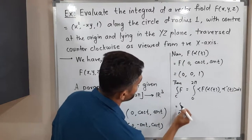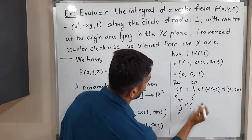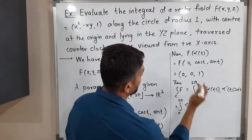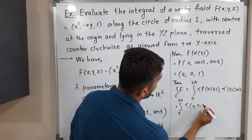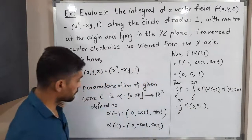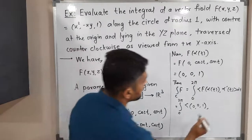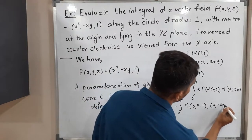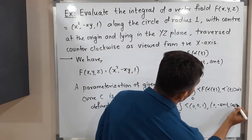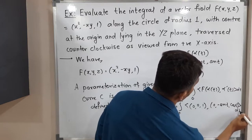So I should write 0 to 2π. Definition says inner product of F(α(t)), α'(t) dt. So this is equal to integration 0 to 2π, inner product of, let us put these values. F(α(t)) is (0, 0, 1). α'(t) is (0, -sin t, cos t). Inner product is over, I should write dt.